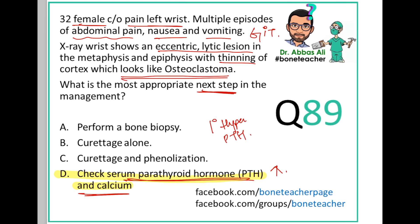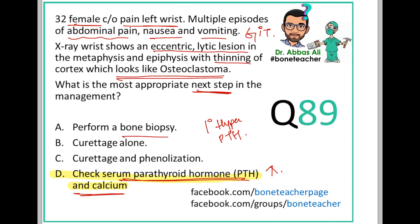Regarding the other options: bone biopsy is a good investigation but unnecessary here because this is not a tumor. Curettage and curettage with phenolization are appropriate treatments once a diagnosis of osteoclastoma or another lesion is confirmed — but we haven't made that diagnosis yet. So the best answer is D.